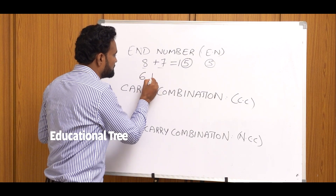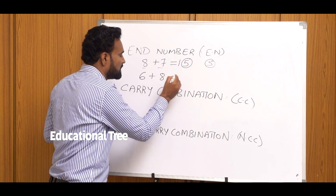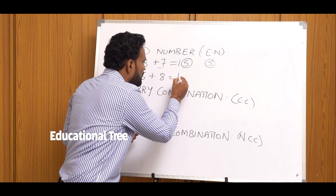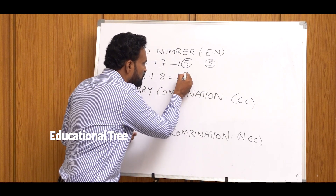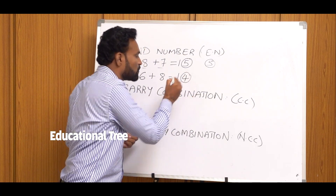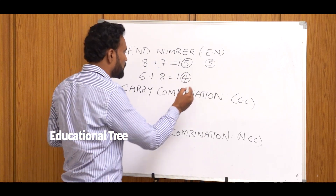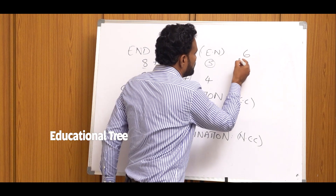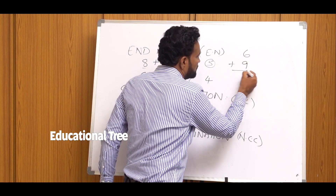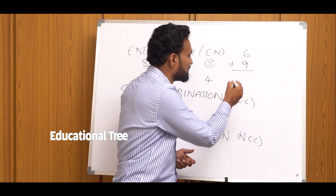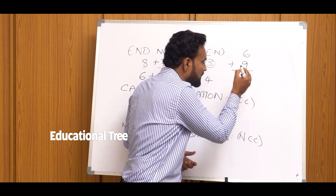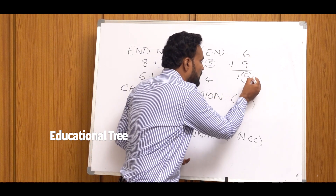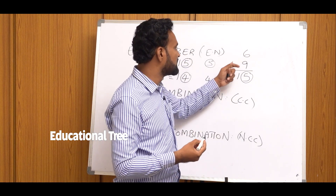Suppose 6 plus 8. The sum of 6 and 8 is 14. The unit place digit is 4, so 4 is the End Number of 6 and 8. Another example: 6 plus 9 equals 15. The unit place is 5, so 5 is the End Number of 6 and 9.